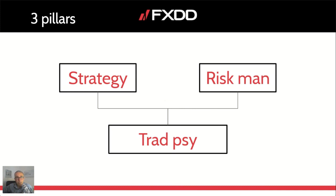Too much risk could destabilize things. Being too emotional could do that. Not having a good strategy could do that. All three things need to be in harmony and balanced. These are the three pillars of trading — all need their own attention. Once all three are addressed and balanced, that's where consistency and long-term results come from.